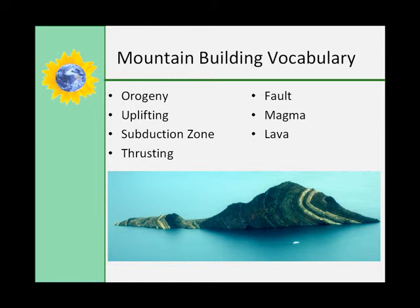The subduction zone is an area where two tectonic plates come together and at least one is forced deep into the earth where it melts in the mantle. Thrusting is when blocks of rock are forced up onto and across the continental crust through the force of a continental collision, so this would be a convergent boundary.